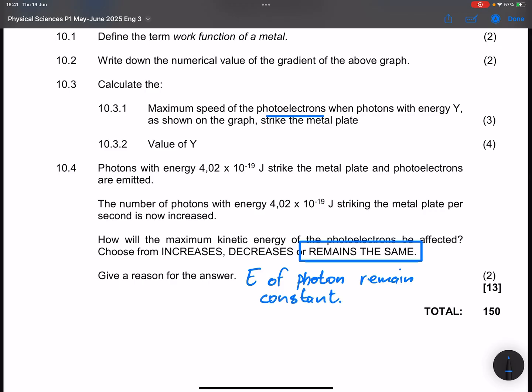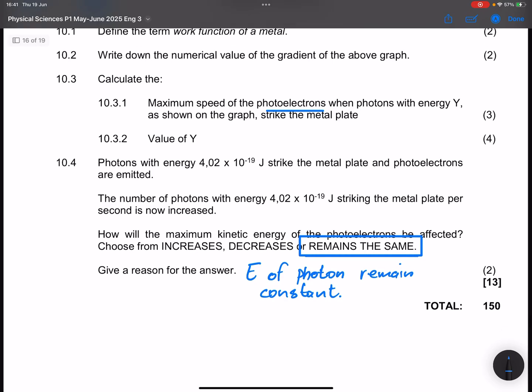Right, so that is really how the cookie crumbles, ladies and gents, and we are going to leave it there. So please remember, what does increasing the intensity actually affect? It will only affect, in this particular case, it will only affect the number of photoelectrons that are emitted per second, and so that will affect the photocurrent, but it will not affect the speed of the photoelectrons.